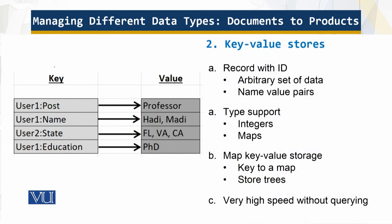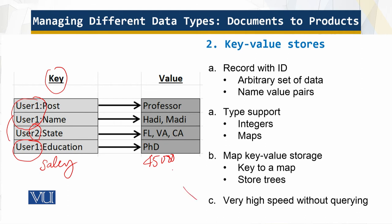In the key-value store, I have these keys for different users. Two users may share the same keys, but I can also have an arbitrary set of data — for example, a salary field with an integer, or text values. The benefit of this approach is very high query speed. The reason for the higher speed is that I just access the key and directly retrieve the value, with no database query and no join required.